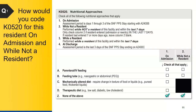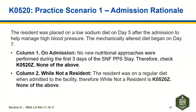The answer is none of the above. The resident was placed on a low-sodium diet on day five after admission, and the mechanically altered diet began on day seven. So for Column 1, On Admission, no nutritional approaches were performed during those first three days of the PPS stay — therefore, you would choose none of the above. For Column 2, While Not a Resident, the resident was on a regular diet when admitted to the facility, so while not a resident is also Z, none of the above.